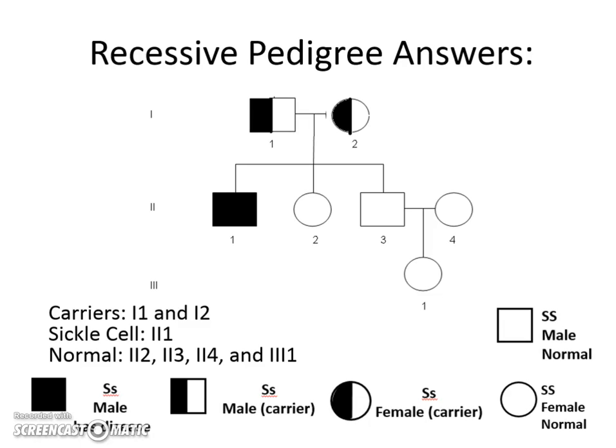Recessive pedigree answers: we have two carriers on this chart — the top two, which we can think of as grandma and grandpa. Individual I-1 and I-2 in generation one are carriers because they're halfway shaded in. The only affected individual on this pedigree is individual II-1, a male, who is fully shaded in. In order for him to get the trait, he had to receive the recessive allele from dad and the recessive allele from mom. This is like having a mom and dad who both carry a red hair allele — the child happens to get the red hair trait from both parents and thus shows the recessive trait. This is why recessive traits can be hidden in family members and show up in later generations.